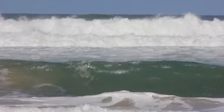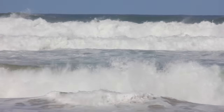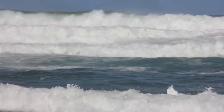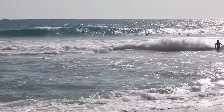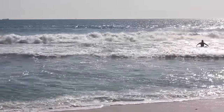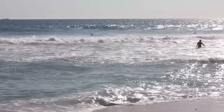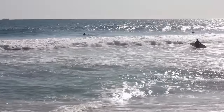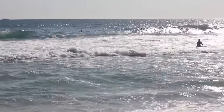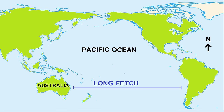Even on calm days it is possible to get big waves, as these ones have been generated in a storm somewhere else some time ago. Waves that have been generated somewhere else are called swell. Swell waves have a long wavelength and are considered desirable by surfers compared to the choppy locally produced waves which have short wavelengths. Waves on the east coast of Australia are often big as they have traveled a long distance across the Pacific Ocean before reaching Australia.